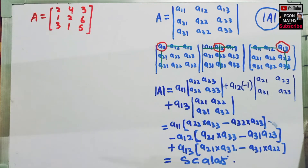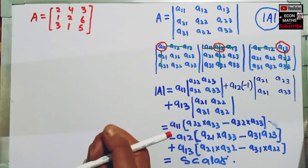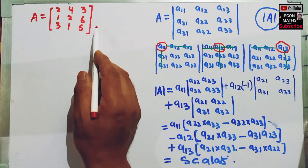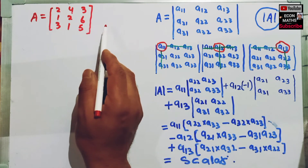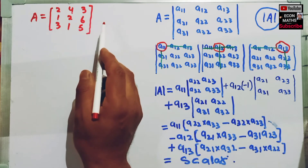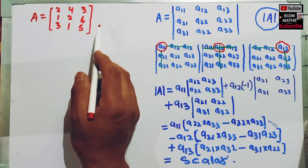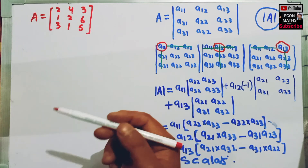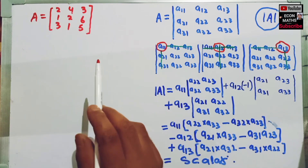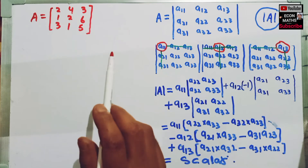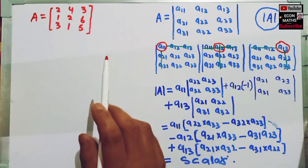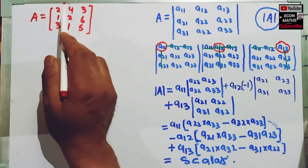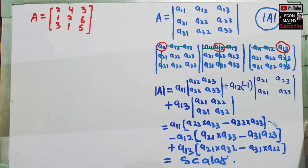We will find the determinant of this matrix. Since it is a 3 by 3 matrix, we can find the determinant. As told in earlier videos, we can only find the determinant of a square matrix, where the number of rows and number of columns are equal.